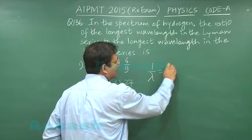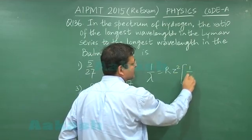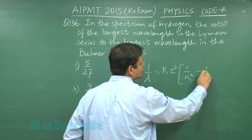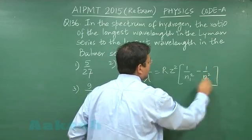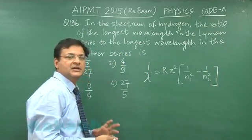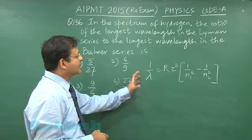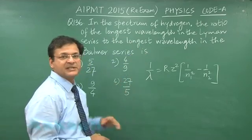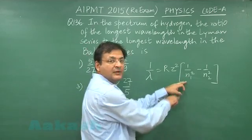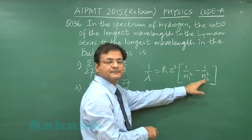1 by lambda is equal to R z square 1 by n1 square minus 1 by n2 square. Now see, longest means the frequency should be minimum. If you are trying to calculate the longest wavelength, say first in Lyman series, that means n1 will be 1 and n2 will be 2.